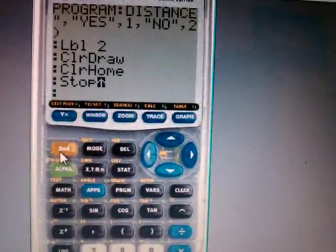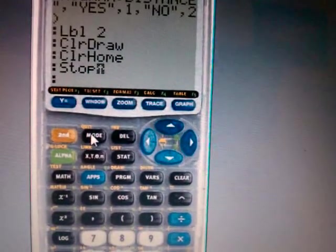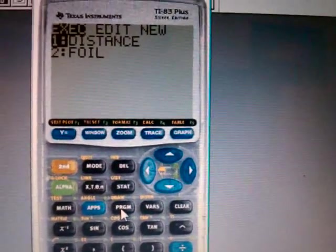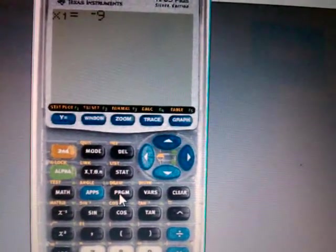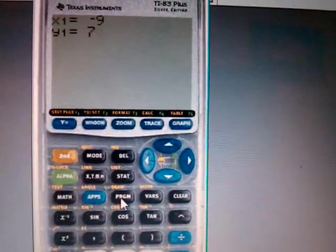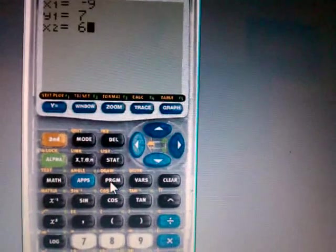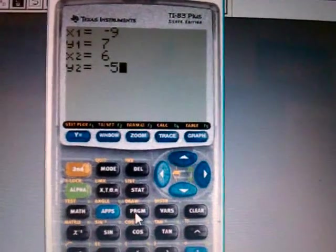That's the code you need. You write the code, and I'm going to get out—I'm going to hit second Mode or second Quit. I'm going to hit Program. Here's my Distance program. I'm going to hit enter, enter. I'm just going to type in some numbers: negative 9, 7, I'm going to say 6, and negative 5. Those are my numbers I'm hitting in, enter.